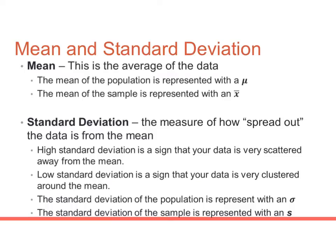Let's get our definitions of mean and standard deviation. The mean is the average of the data — adding up all your data and dividing by how many you have. When talking about the mean of a population, we represent that with the Greek symbol mu. The mean of a sample — taken out of the population — is represented with x-bar.